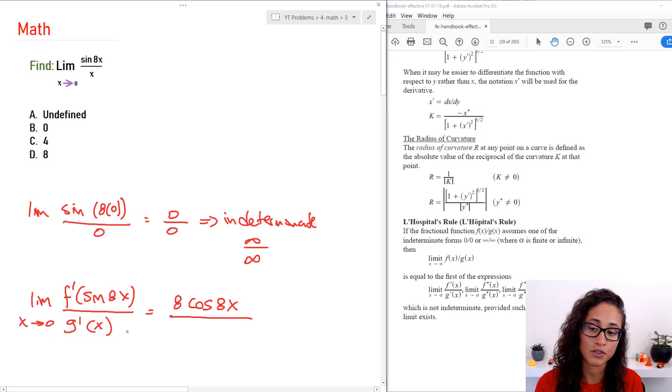Now I have the derivative of x, which is just 1. I should have kept the limit here, and this is x goes to 0. Now I can substitute x equals 0 in here. I'm going to get 8 cosine of 8 times 0 over 1.